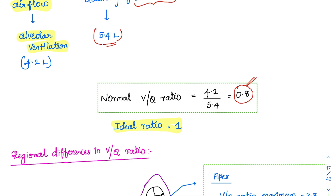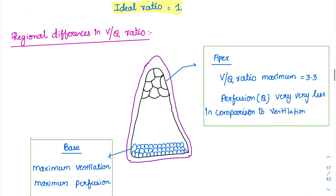Even in the lung, the V/Q ratio is not at an ideal ratio, and there are regional differences in the V/Q ratio. The V/Q ratio is not similar throughout the lung — 0.8 is an average value.